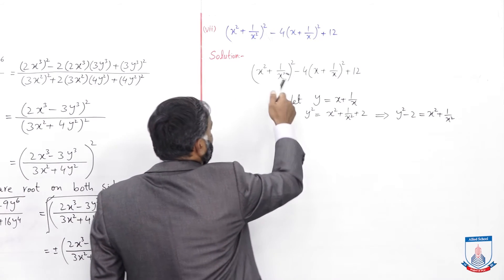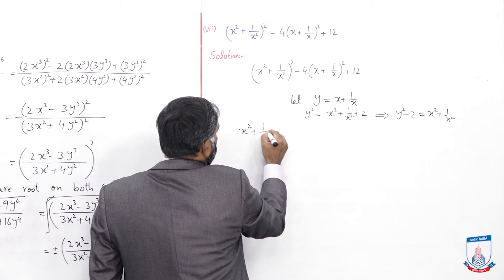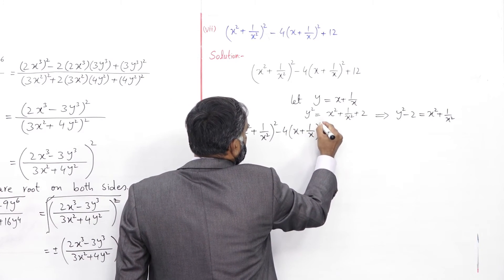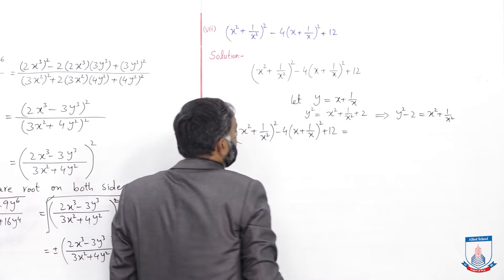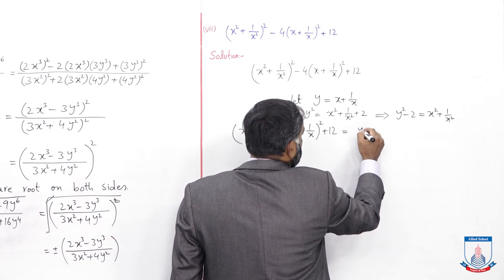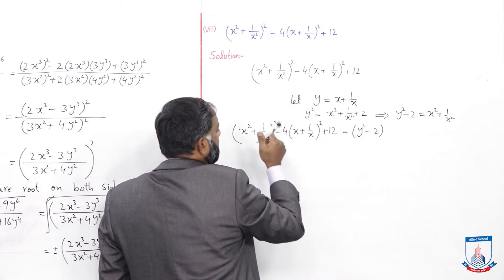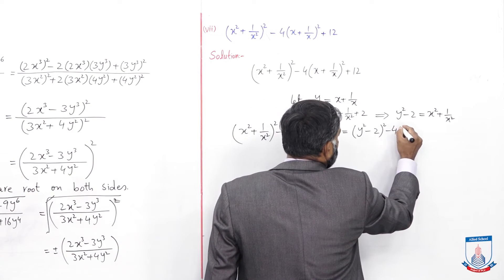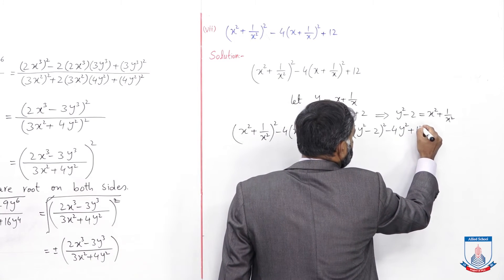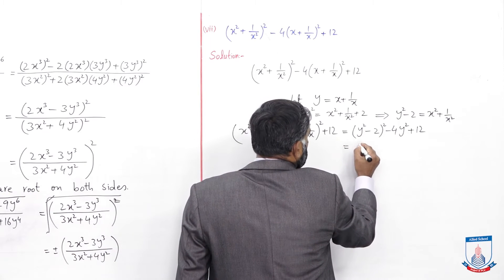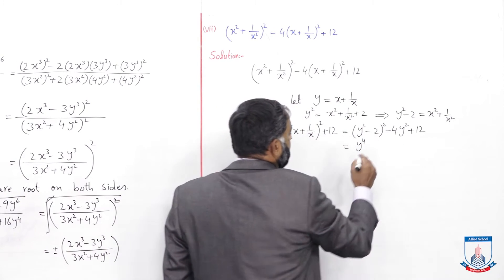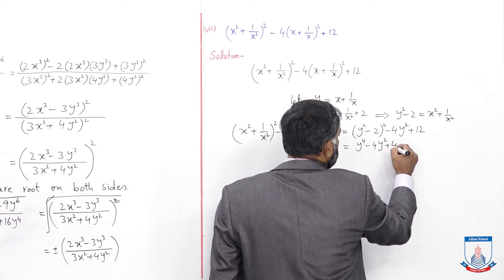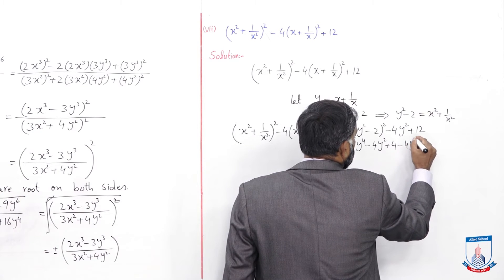अब expression में substitution करते हैं: (x²+1/x²)² - 4(x+1/x)² + 12। x²+1/x² की जगह y²-2 रखें — चूँकि यहाँ भी whole square है तो (y²-2)² आ जाएगा। Minus 4 — x+1/x को y let किया था तो minus 4y² आ गया, plus 12। Square open करें: y⁴ - 4y² - 4y² + 4 - 4y² + 12।